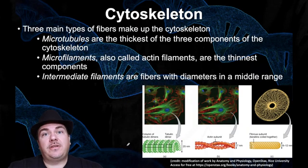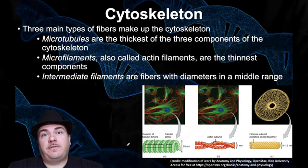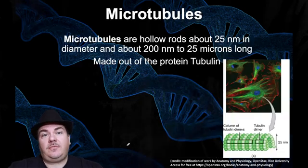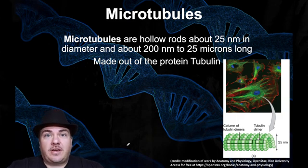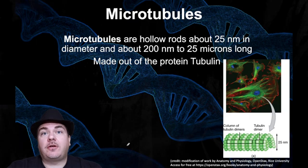With the cytoskeleton, there are three types of fibers: microtubules, microfilaments, and intermediate filaments. Microtubules is the largest type of fiber, microfilaments is the smallest type, and intermediate filaments is of intermediate — middle — size. We're going to go through these one by one. The first one is microtubules, the largest type of fiber for the cytoskeleton. You don't have to memorize the specific numbers; just know it's the largest fiber.